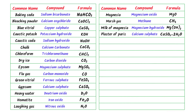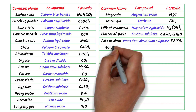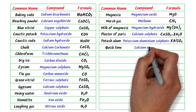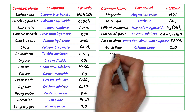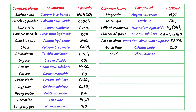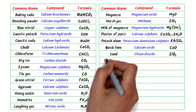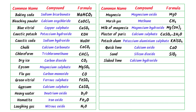The nineteenth is plaster of Paris — it is calcium sulfate and its chemical formula is CaSO4·2H2O. The twentieth is potash alum — it is potassium aluminum sulfate and its chemical formula is KAl(SO4)2. The twenty-second is sand — it is silicon dioxide and its chemical formula is SiO2.